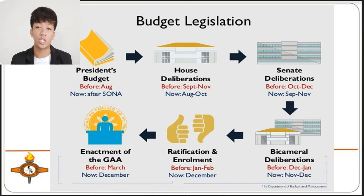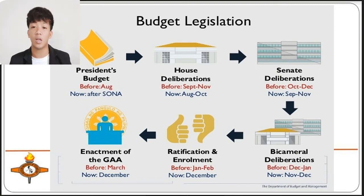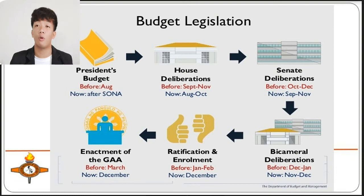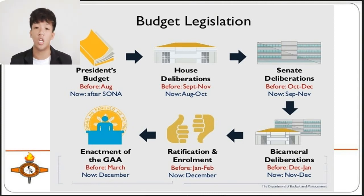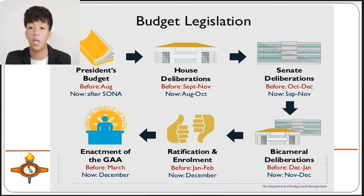As in the House process, the Senate conducts its own committee hearings and plenary deliberations on the General Appropriations Bill. Budget deliberations in the Senate formally start after the House of Representatives transmits the General Appropriations Bill. However, the Senate Finance Committee and subcommittees usually start hearings on the GAB even while House deliberations are ongoing. The committee submits its proposed amendments to the GAB to plenary only after it has been formally transmitted by the House.